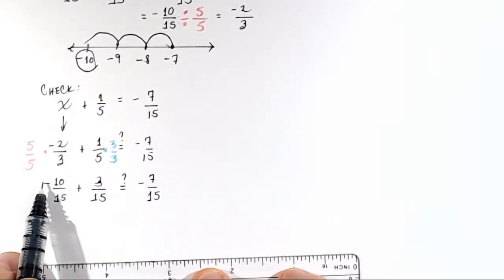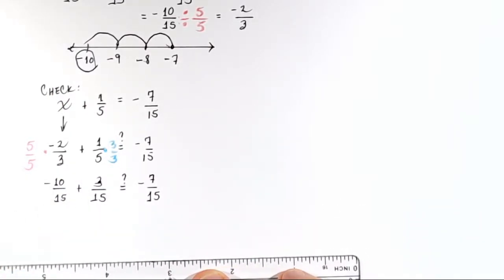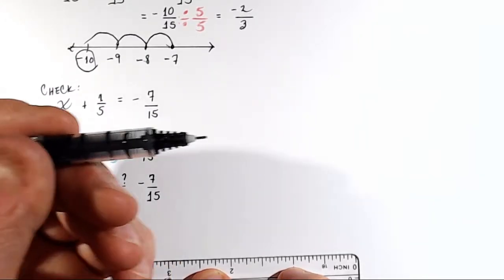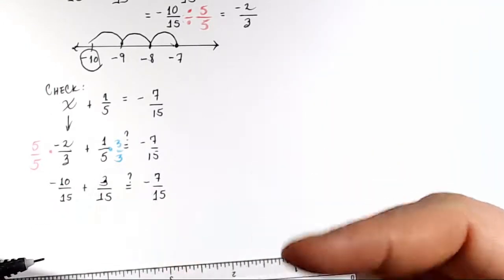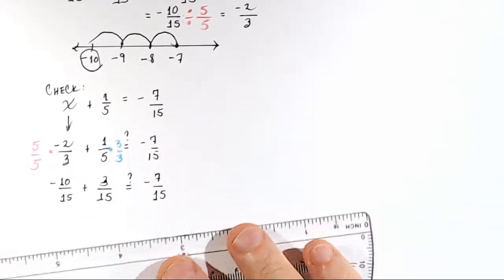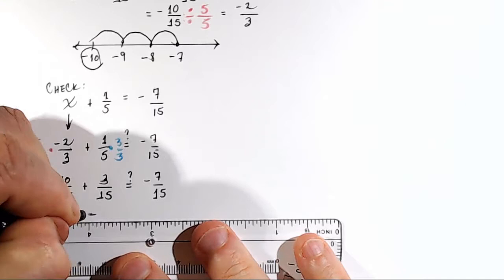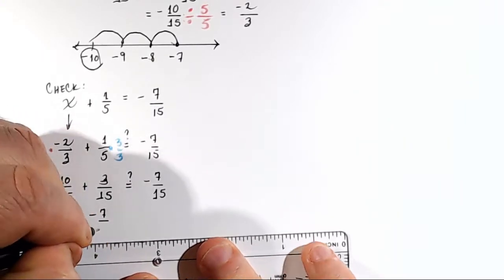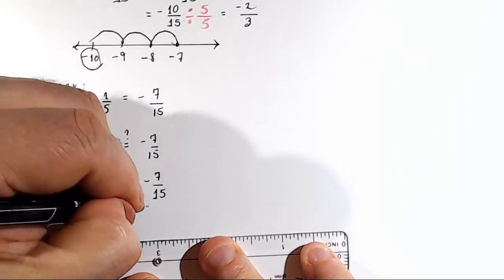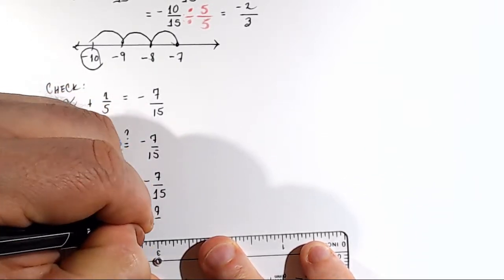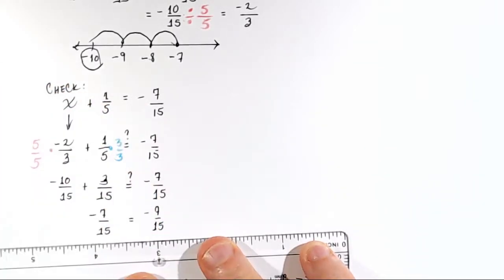Well, what is negative 10 plus 3? Negative 10 plus 3, now we're moving to the right. You have negative 10, negative 9, negative 8, negative 7. So negative 7 over 15 equals negative 7 over 15. That's a true statement.